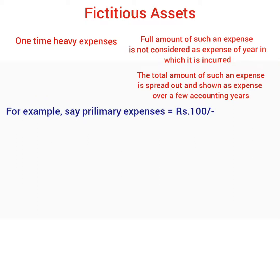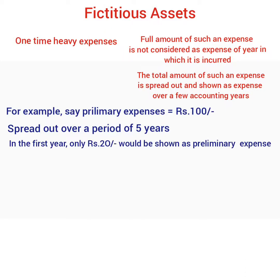For example, say preliminary expenses are Rs 100. The firm may spread this preliminary expense over a period of 5 years. So in the first year, only Rs 20 would be considered as preliminary expenses. This figure is derived by dividing Rs 100 by 5. The balance of Rs 80 would be shown as an asset in the first year. This Rs 80, shown as an asset, is an example of a fictitious asset.